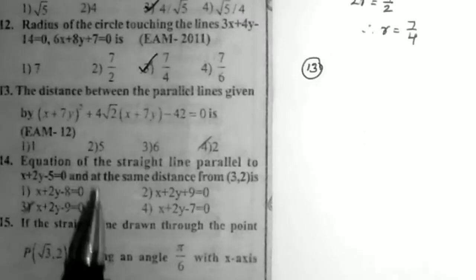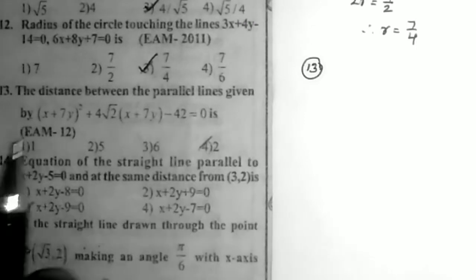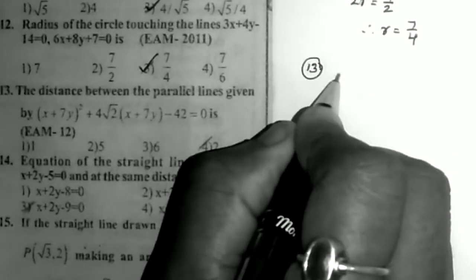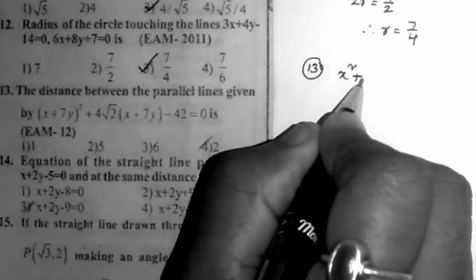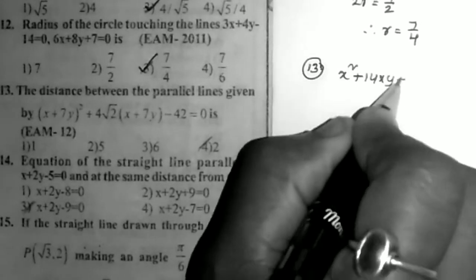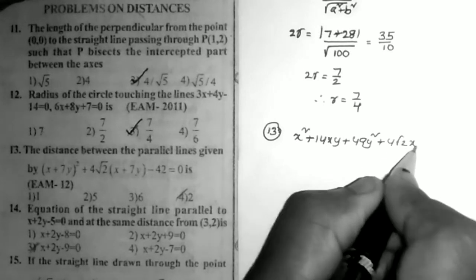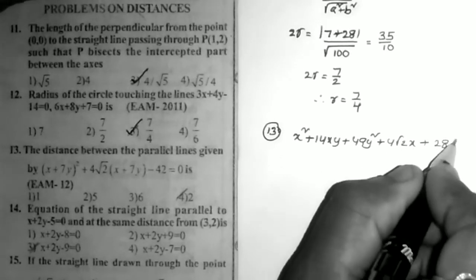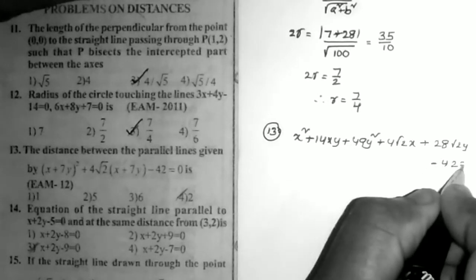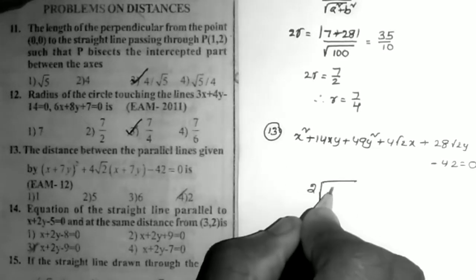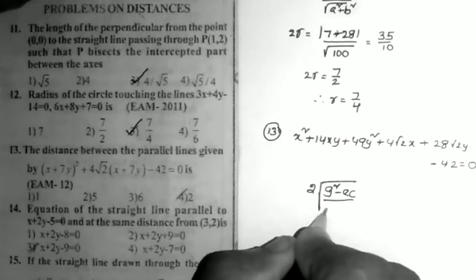Problem 13: Find the distance between the parallel lines given by (x + 7y)² + 4√2(x + 7y) − 42 = 0. Expanding: x² + 14xy + 49y² + 4√2·x + 28√2·y − 42 = 0. The formula for finding the distance between parallel lines from a pair of straight lines equation is 2√(g² − ac) / (a(a + b)).